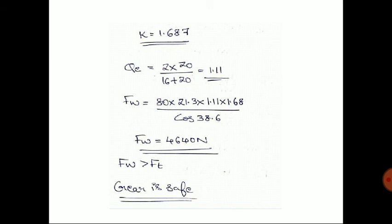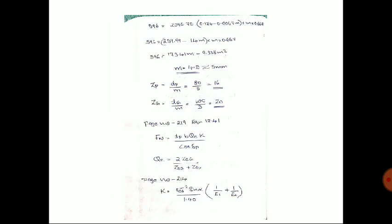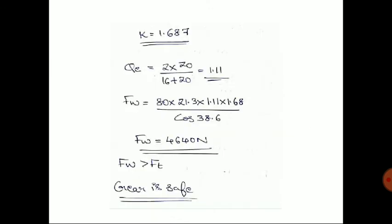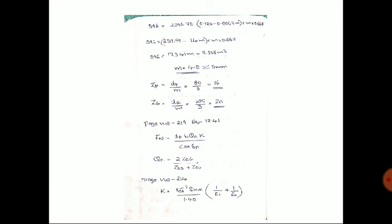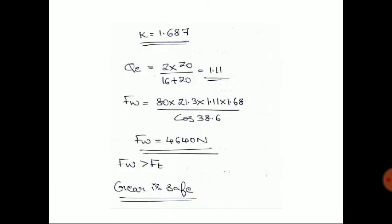Substituting all values into the wear equation gives Fw = 4640 N. Since Fw (4640 N) is greater than Ft (596 N), the condition Fw > Ft is satisfied. This means the gear can withstand wear loads up to 4640 N, while the applied tangential load is only 596 N. Therefore, the gear design is safe from the wear standpoint.